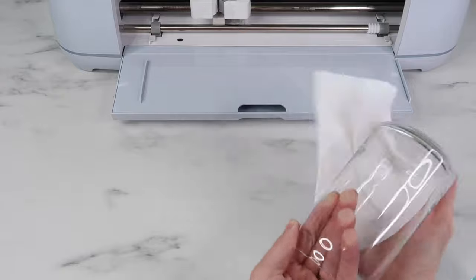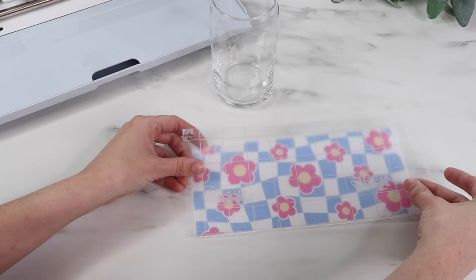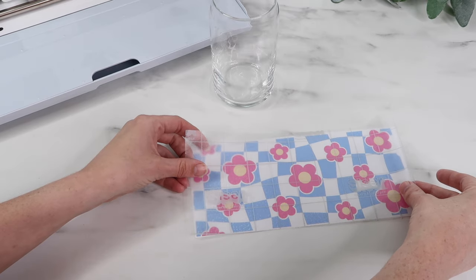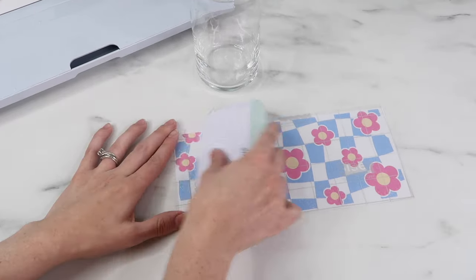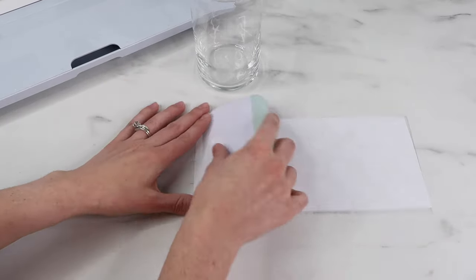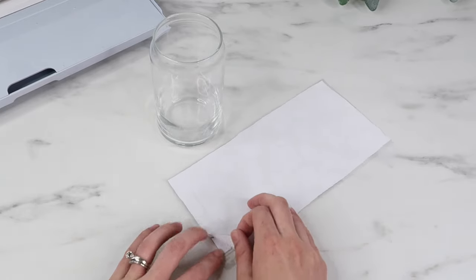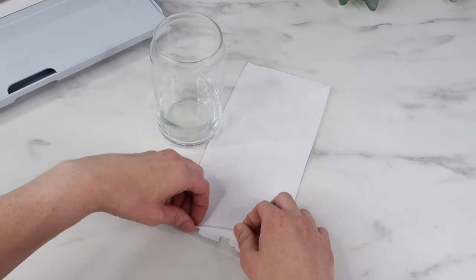Then I grab my transfer tape and place it over my printable sticker paper. Then I go in and scrape it down really well. I want the vinyl to easily pick up onto my transfer sheet.